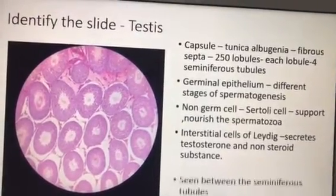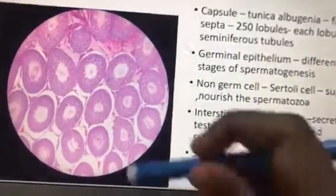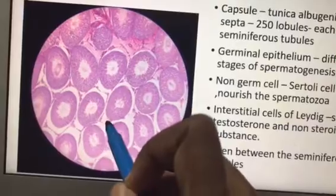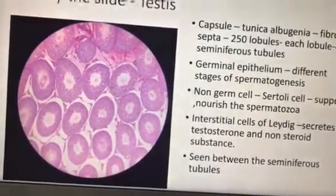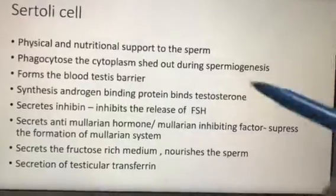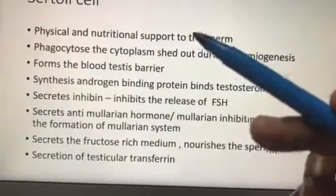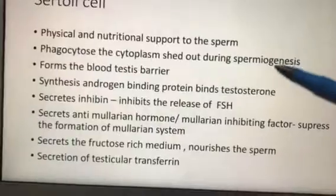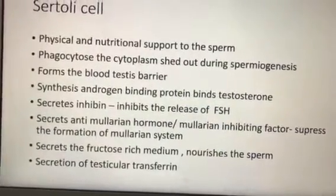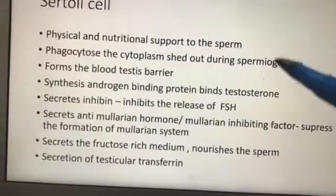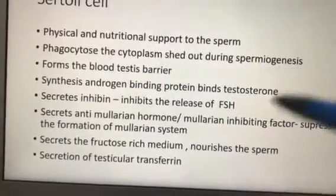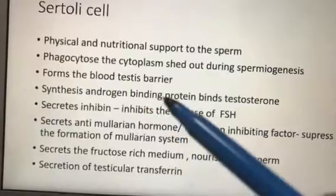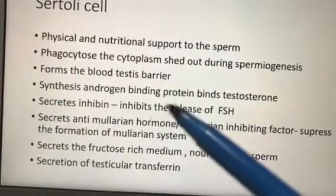The interstitial cells of Leydig are seen between the seminiferous tubules. Sertoli cell functions: first, nutritional support; second, phagocytosis of cytoplasm shed during spermiogenesis. Spermiogenesis is the process by which the spermatid is transformed into spermatozoa — extra cytoplasm shed during this process is phagocytosed by the Sertoli cell. Third, it forms the blood-testis barrier.